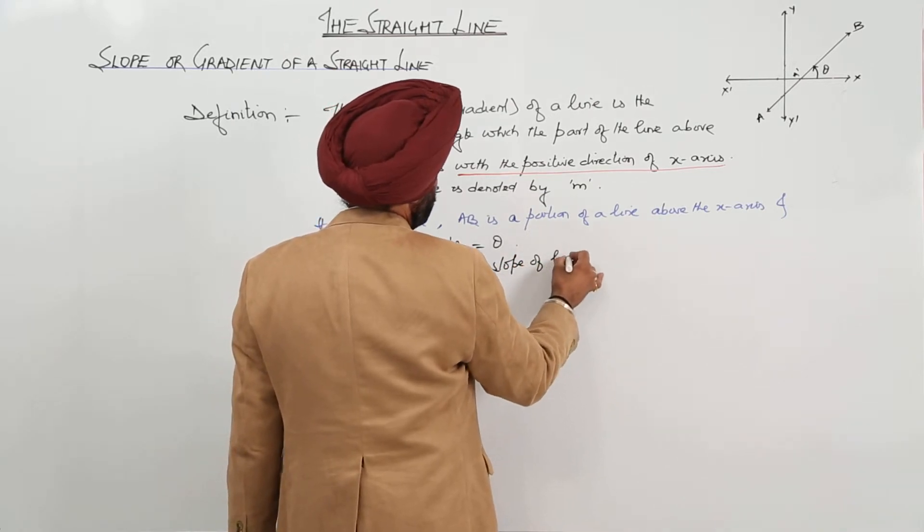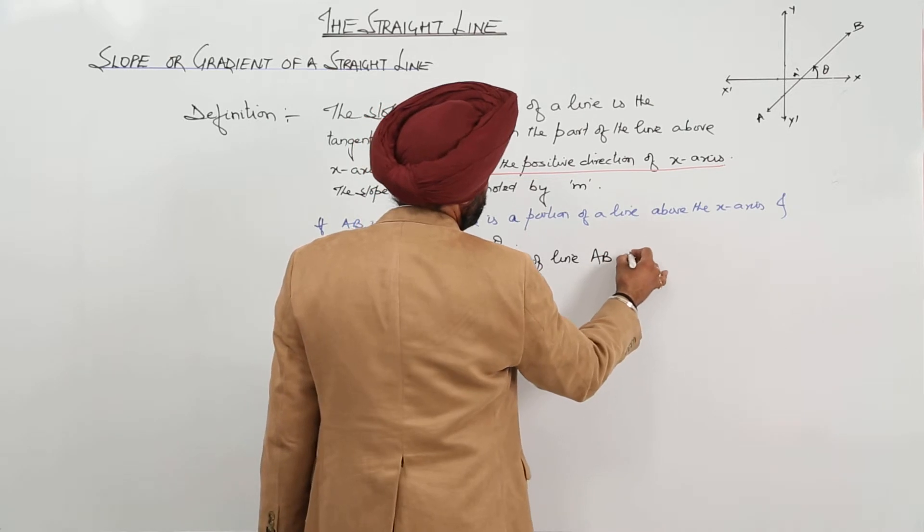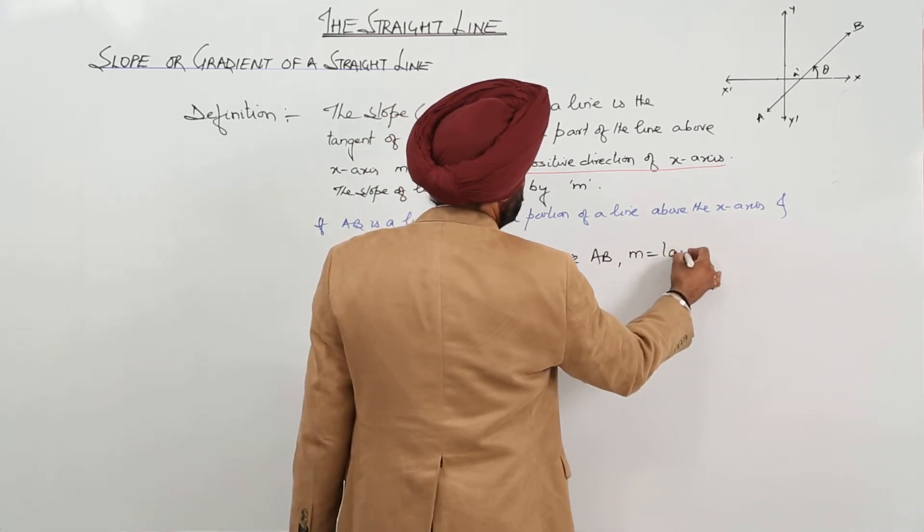The slope of line AB, M is equal to tan theta.